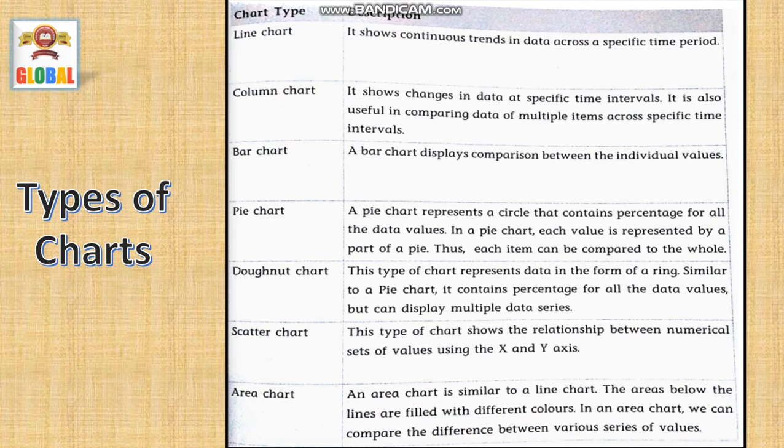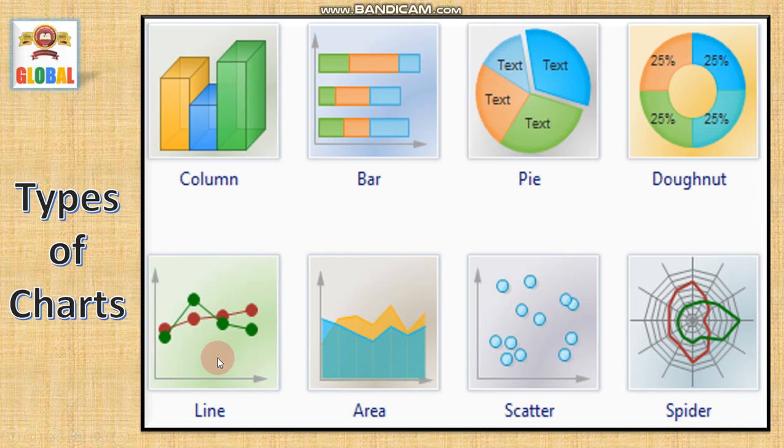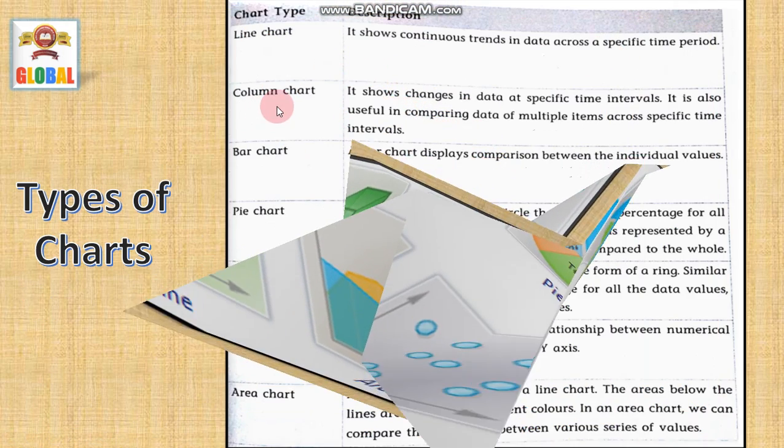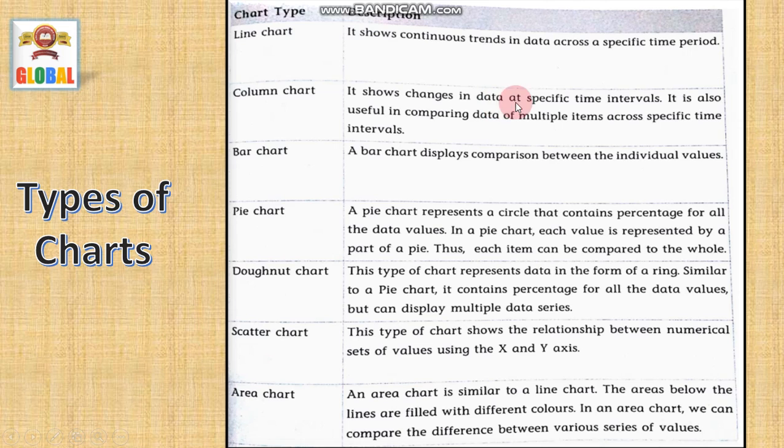Here is the list of the chart type and its description. The line chart shows the continuous trend in data across a specific time period. This is a line chart. Next is column chart. It shows changes in data at specific time interval. It is also useful in comparing data of multiple items across specific time intervals. You studied these types of charts. How to draw these charts in your maths also?